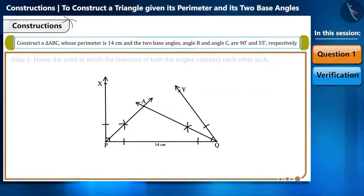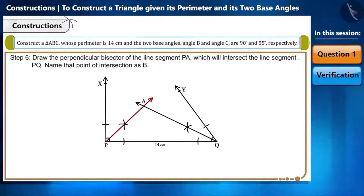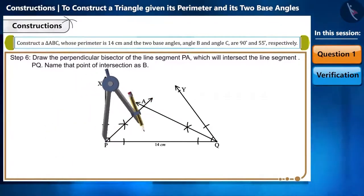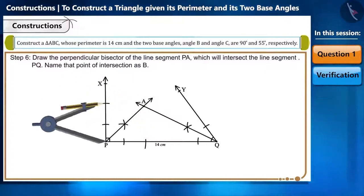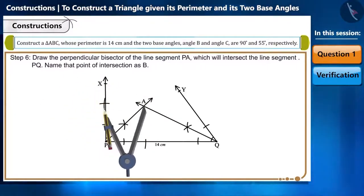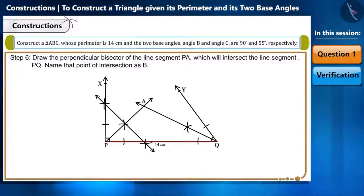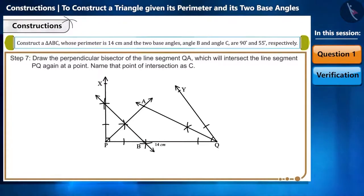Step 6: Now, draw the perpendicular bisector of the line segment PA, which will intersect the line segment PQ. We will name that point of intersection as B. Step 7: